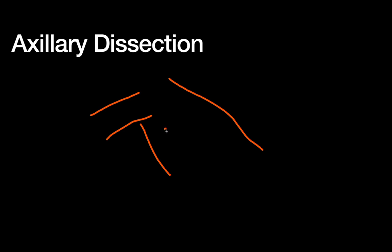Recall that the key structures — especially the thoracodorsal and long thoracic nerves — are posterior and medial. Starting the dissection anteriorly and working through the fat toward the border of the pectoral muscles is usually a safe dissection plane. As long as you can see through the tissue, you can work medially quite consistently to the pectoralis border.